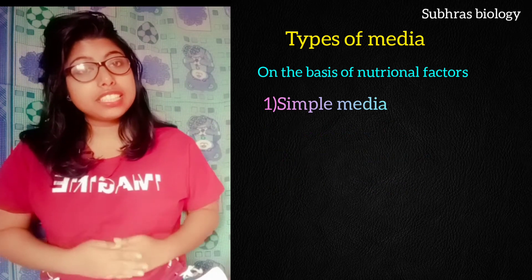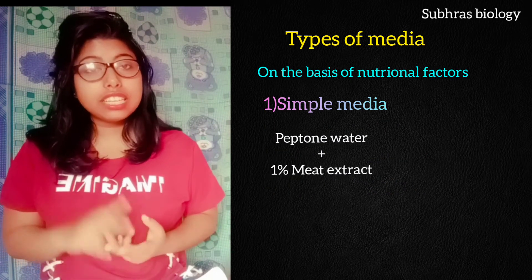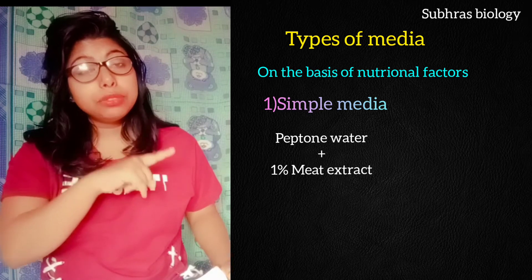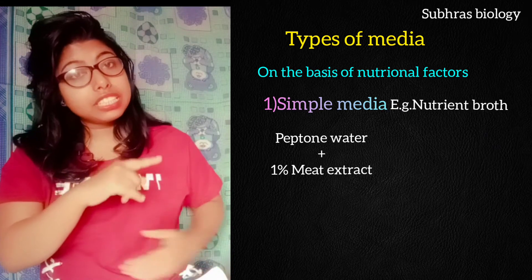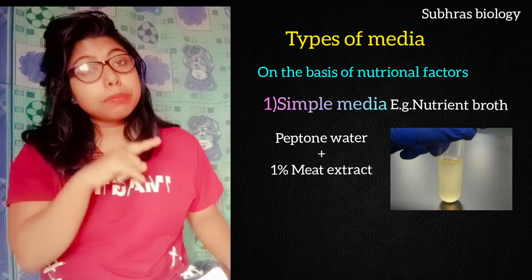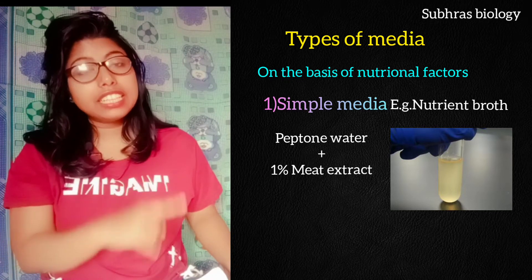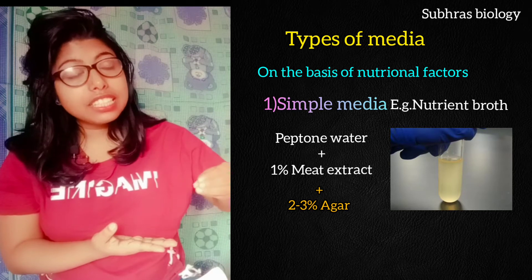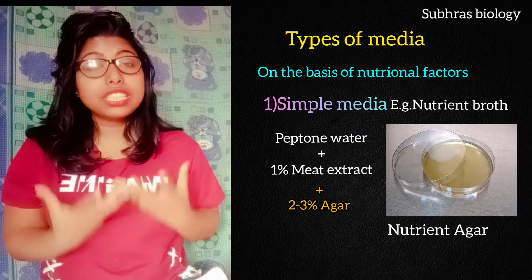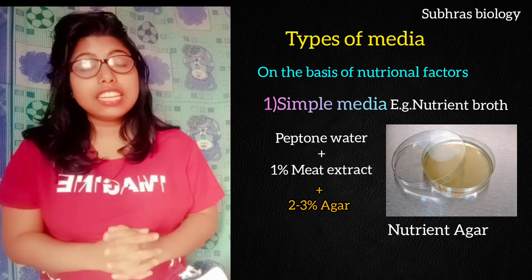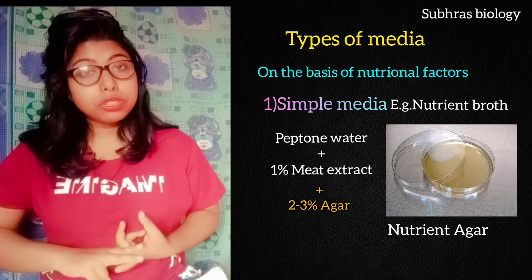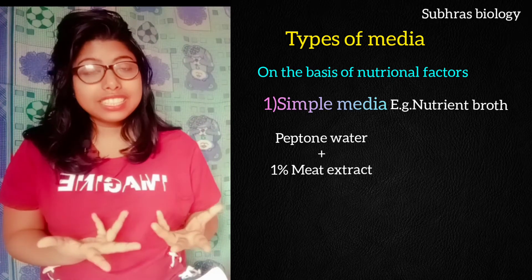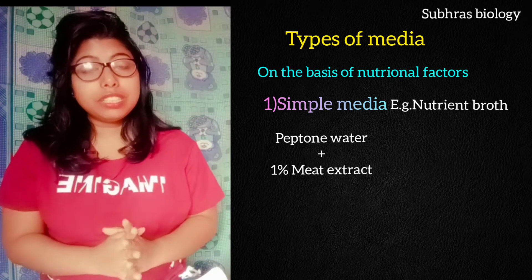Simple media contains peptone, water, and 1% meat extract. The best example is nutrient broth. In microbiology you should know what nutrient broth is. If you add 2–3% agar to nutrient broth, it becomes nutrient agar — a basal medium. If you add glucose to nutrient broth, it becomes glucose broth. Nutrient broth is the classic example of simple media.